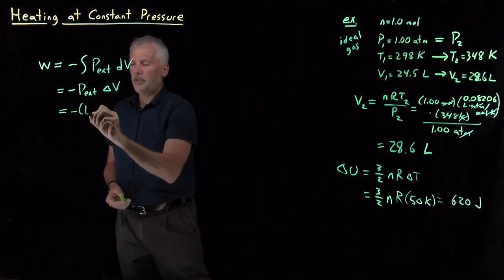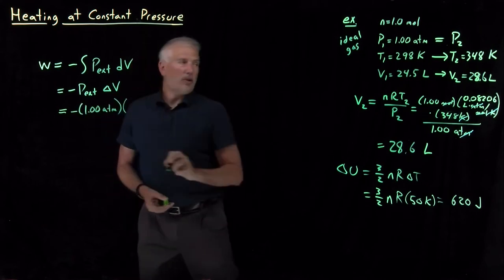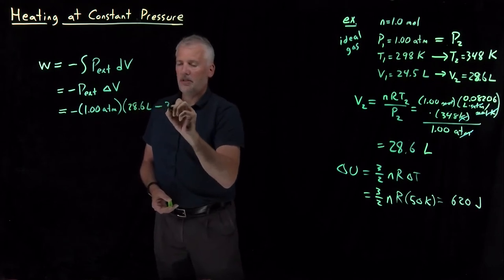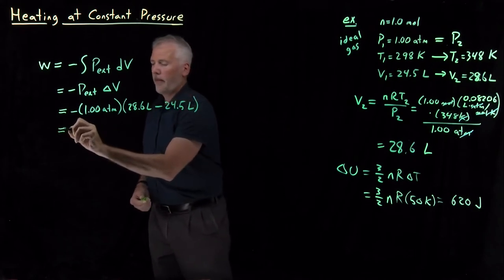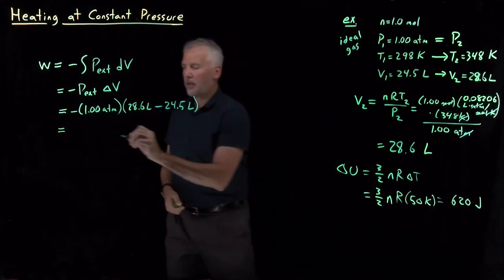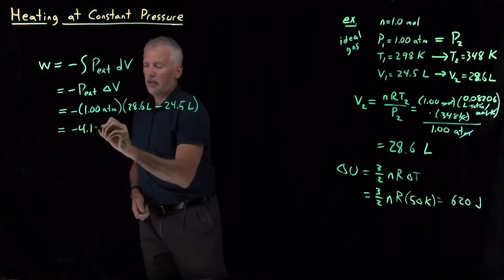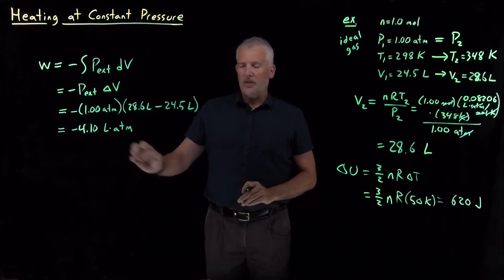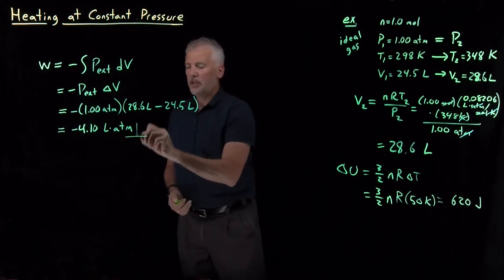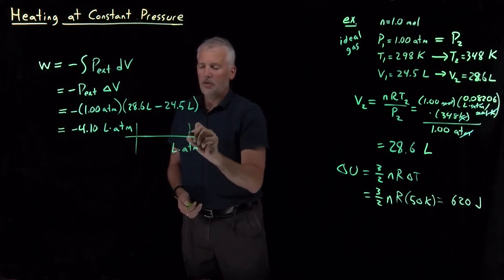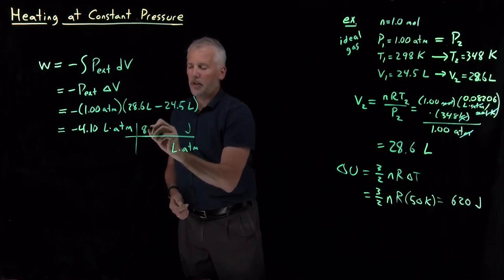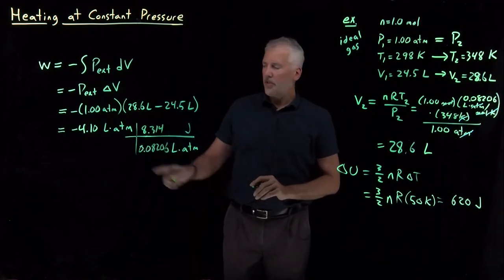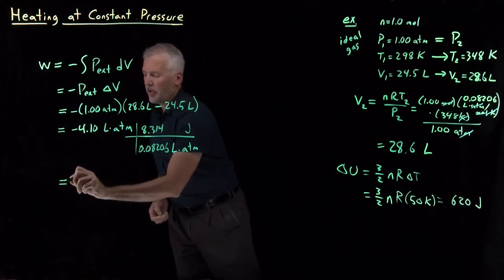The pressure is one atmosphere, the change in volume is 24.5 up to 28.6 liters, so 28.6 minus 24.5, V₂ minus V₁. That change of 4.1 liters multiplied by an atmosphere gives me a total of negative 4.1 liter atmospheres. Liter atmospheres is kind of an inconvenient unit to express work in, so let's change liter atmospheres to joules. There's 101 joules per liter atmosphere. That unit conversion works out to be negative 420 joules.